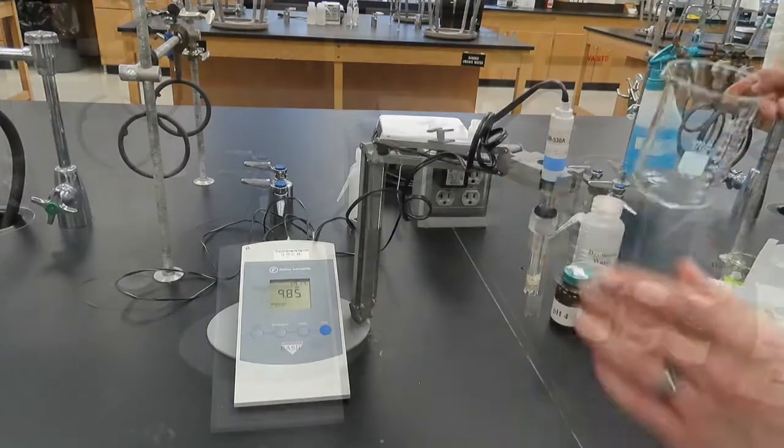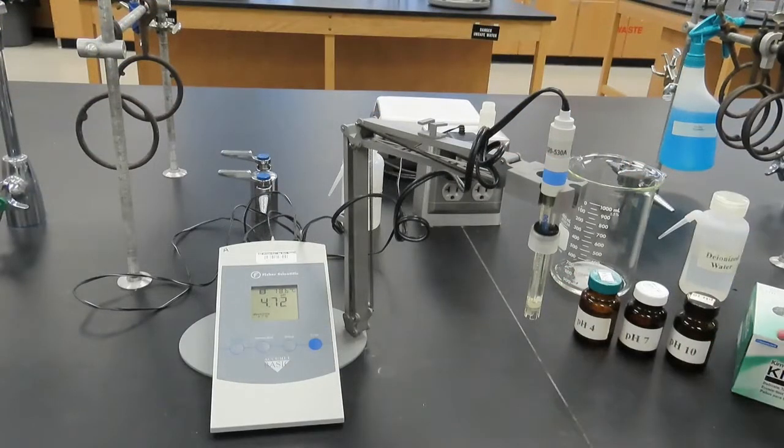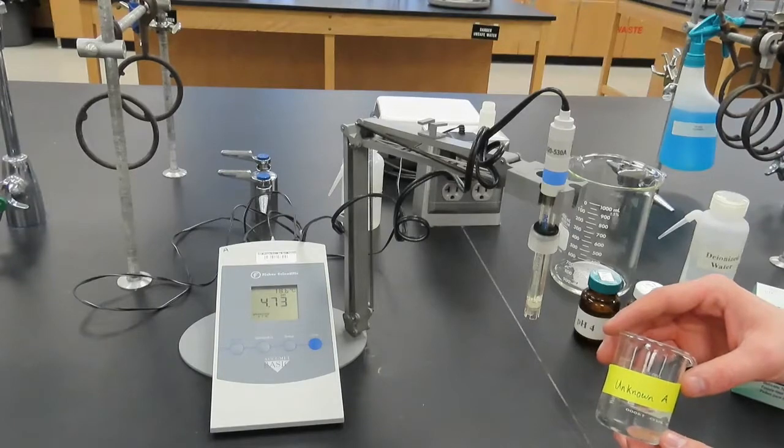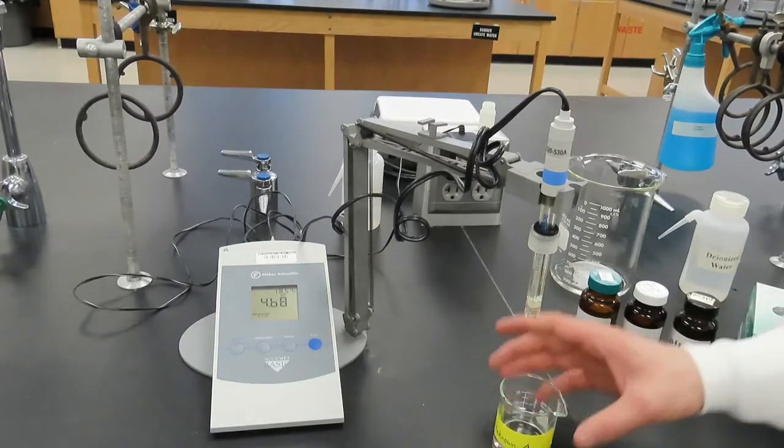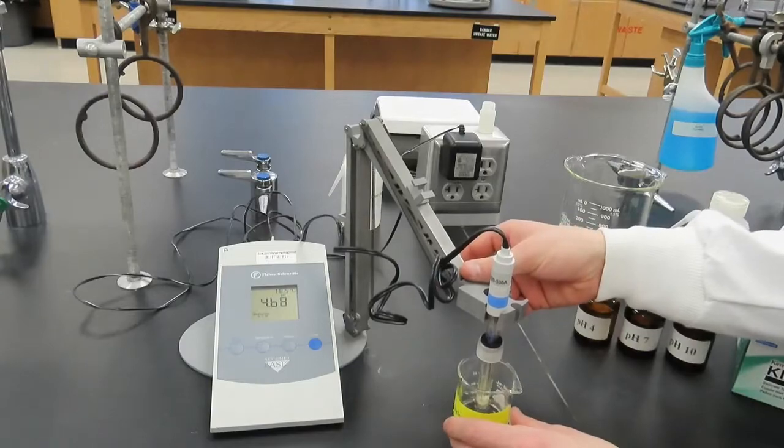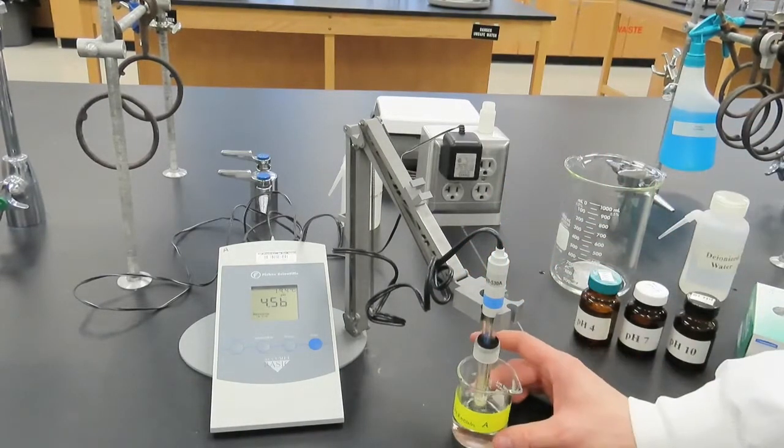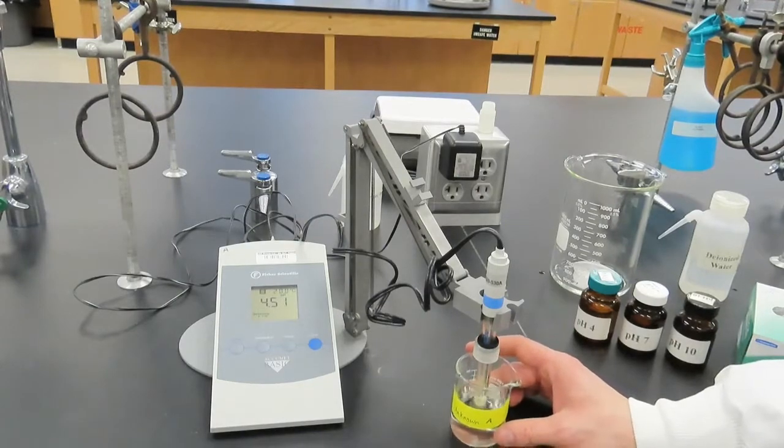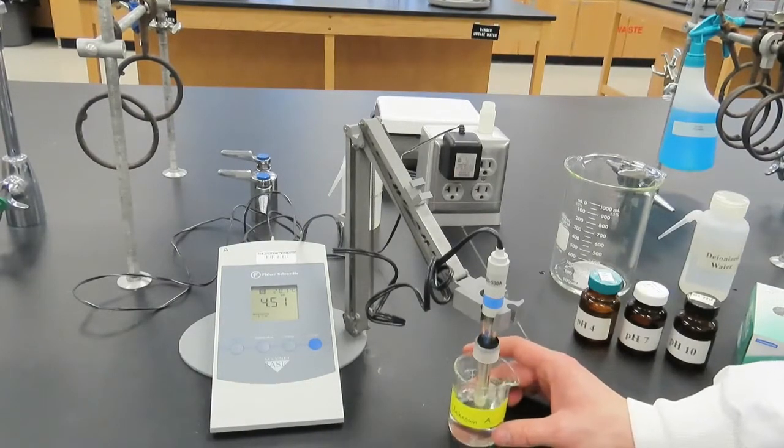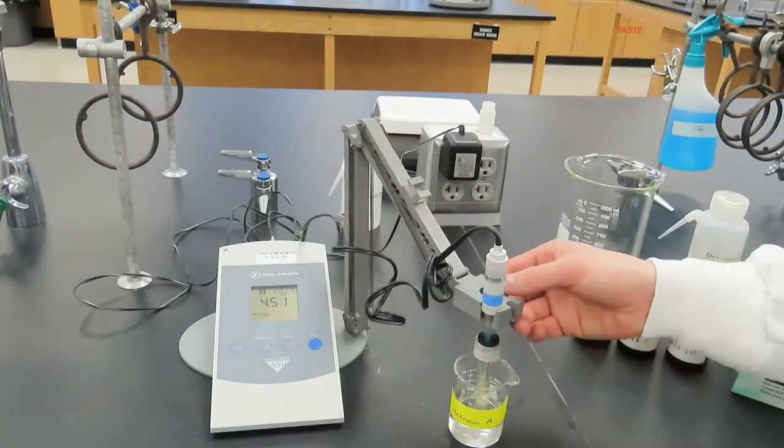The pH meter is now ready to measure the pH of solutions. We will first measure the pH of solution labeled unknown A. We'll immerse the pH electrode into the solution and swirl. The pH value when the display stabilizes is the pH of the solution, approximately 4.51. We'll remove the electrode from the unknown A solution.